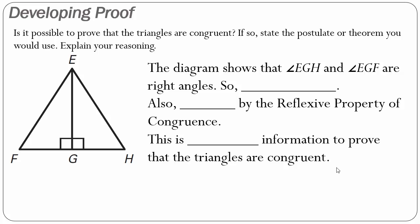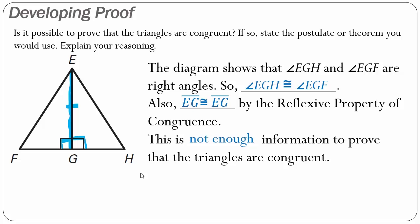The diagram shows that angle EGH and angle EGF are right angles, so angle EGH is congruent to angle EGF. We also notice that side EG is shared by the two triangles, so line segment EG is congruent to line segment EG by the Reflexive Property of Congruence. I only have one set of angles and one shared side — I still need either another side or another angle that is congruent. This is not enough information to prove that the triangles are congruent.